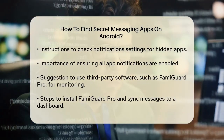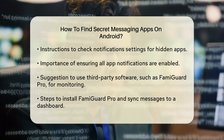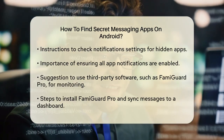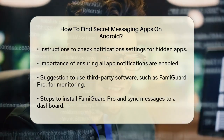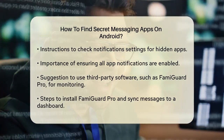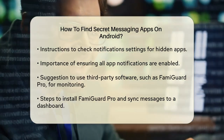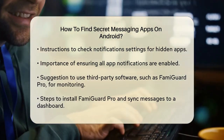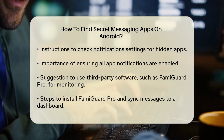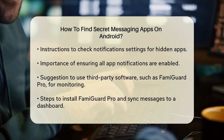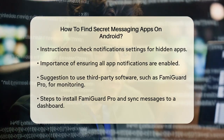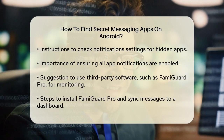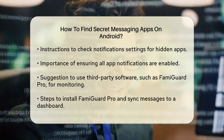Checking notifications: sometimes users turn off notifications to keep their messages private. To see if any apps are hiding notifications, go to Settings, then tap on Notifications. Here, you can check if all apps' notifications are turned on. Scroll down to ensure that notifications for all apps are enabled.